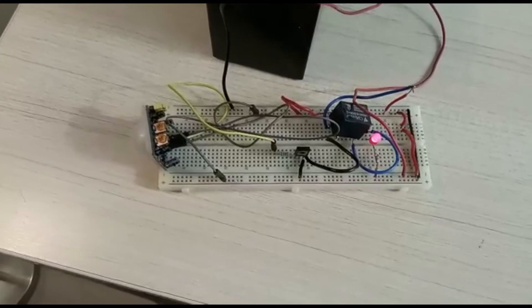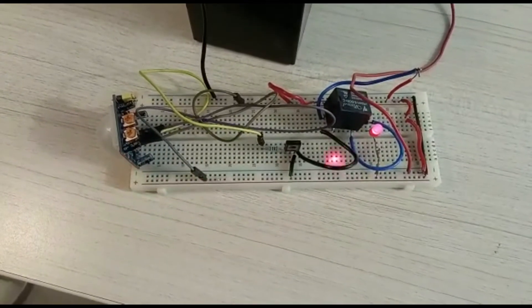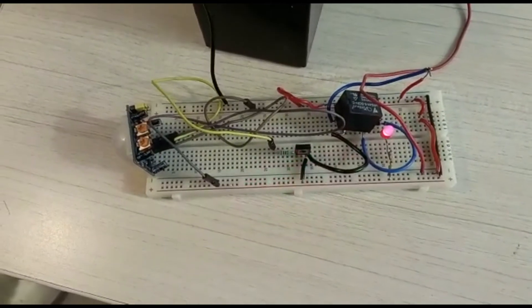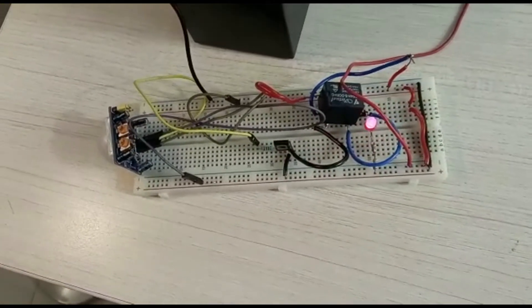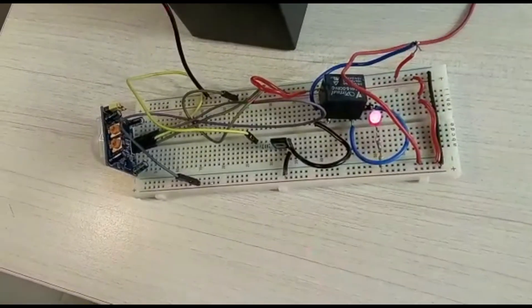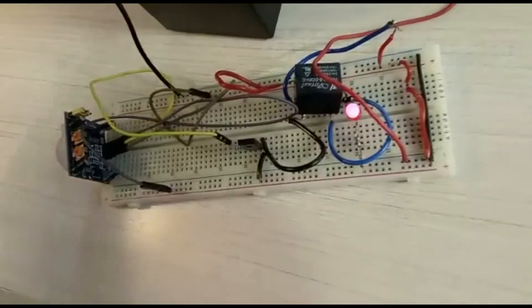The components we need here are a HC SR501 PIR motion sensor, 12V LC solenoid valve, 1N4007 rectifier diode, BD139 NPN transistor and a DC barrel jack.